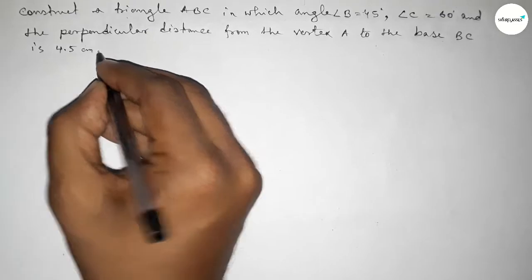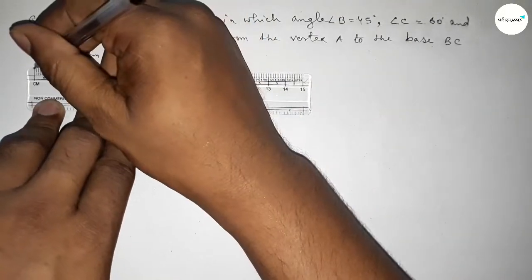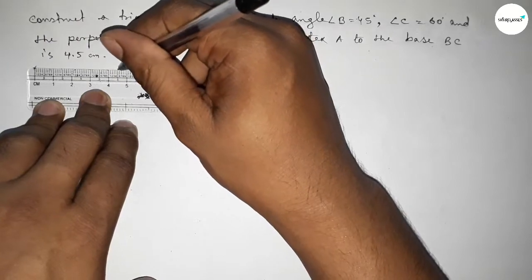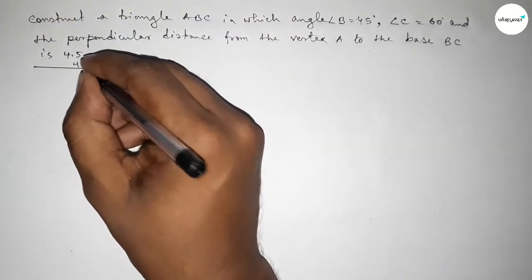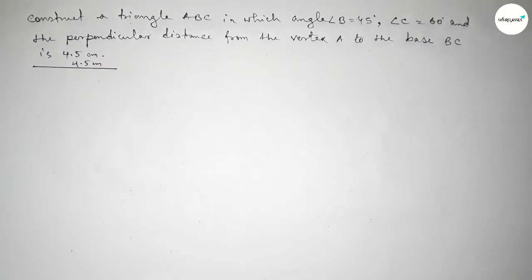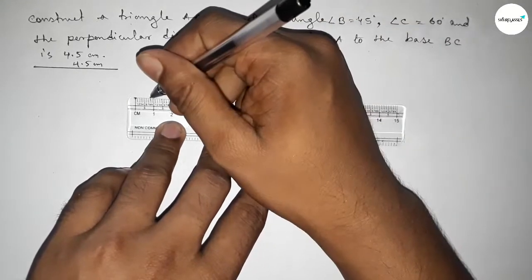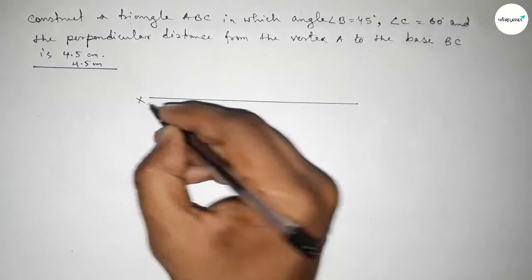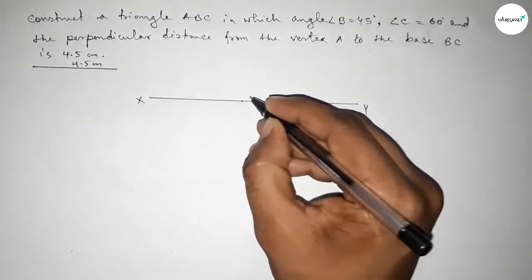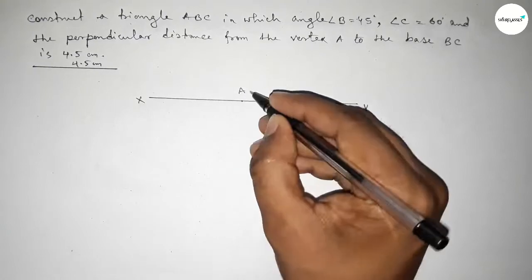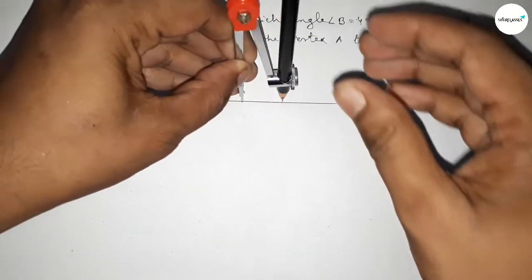Let's start the video. First of all, we have to draw a line of length 4.5 centimeters. Now we have to draw a line of any length, taking point X and Y, and then taking any point A on this line.